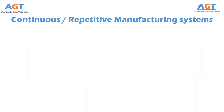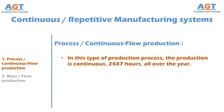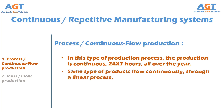Let's have a look at the classifications of continuous production systems. The first is process, or continuous flow production. In continuous flow production, most of the work is done by machines rather than humans. In this type of production process, the production is continuous — 24 hours, 7 days a week, all days in a year. Usually there is very small variation in the products, and the same type of products flow continuously through a linear process.